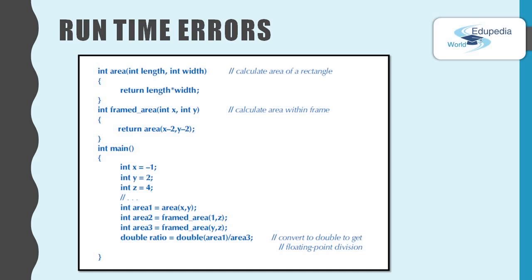Here we have two custom functions: the area function and the framed area function. The area function calculates the area of a rectangle, and the framed area function does the same but with length and width reduced by 2. Inside the main function we have three int variables x, y, and z. Notice that the variable x has a negative value. Now, the value of area1 passes arguments x and y — that means -1 and 2 — so -1 multiplied by 2 is -2. The area1 variable has the value -2.